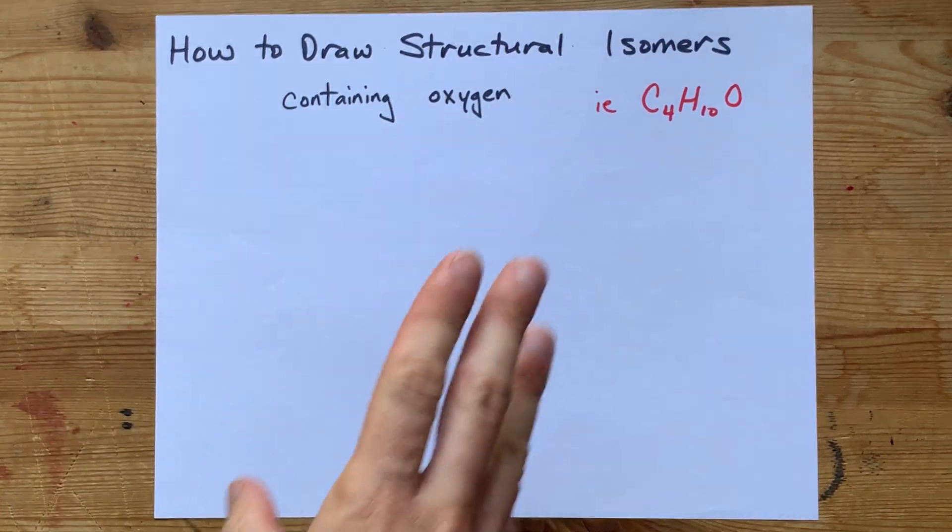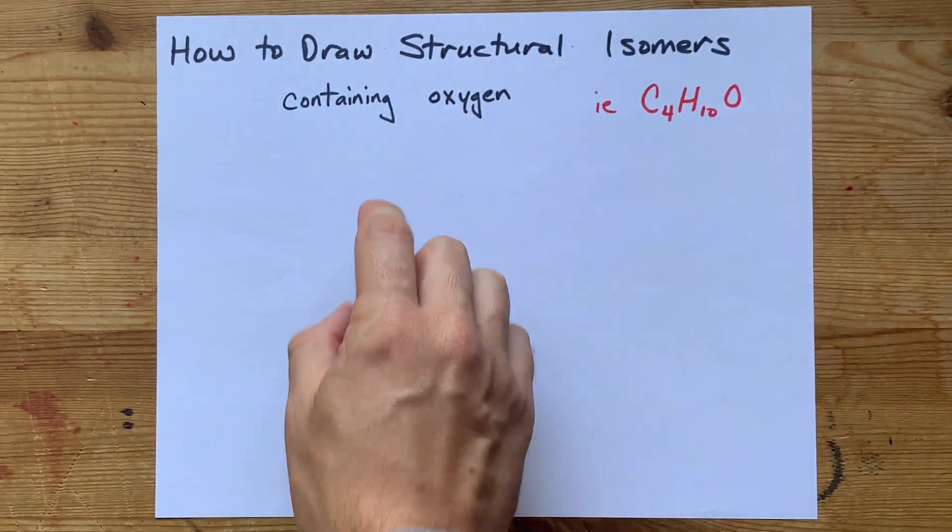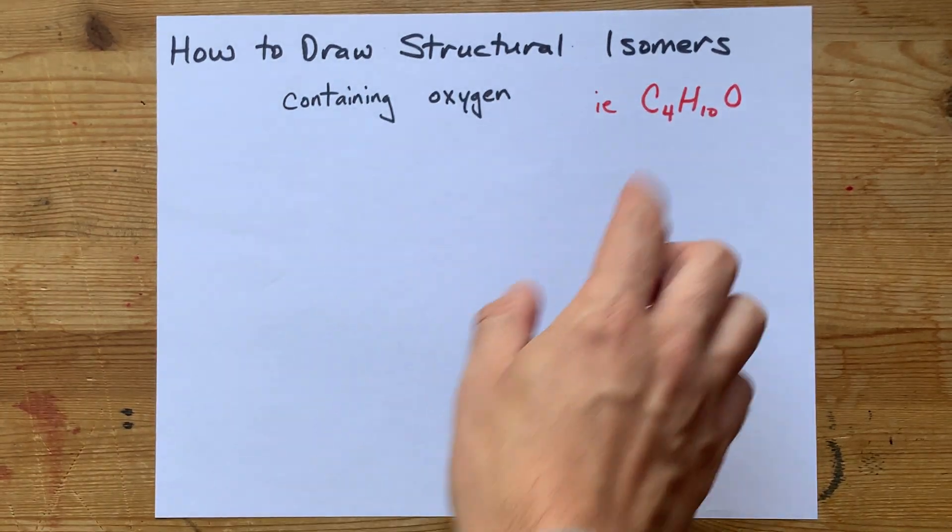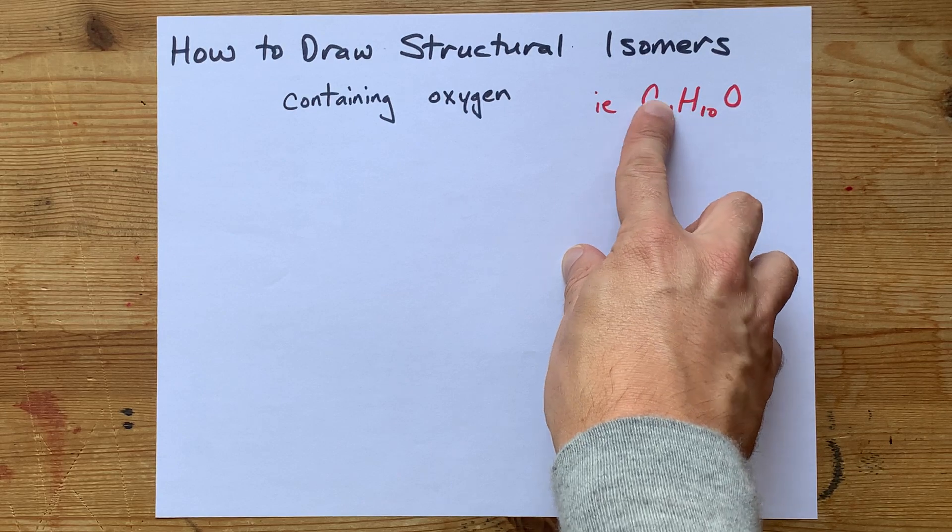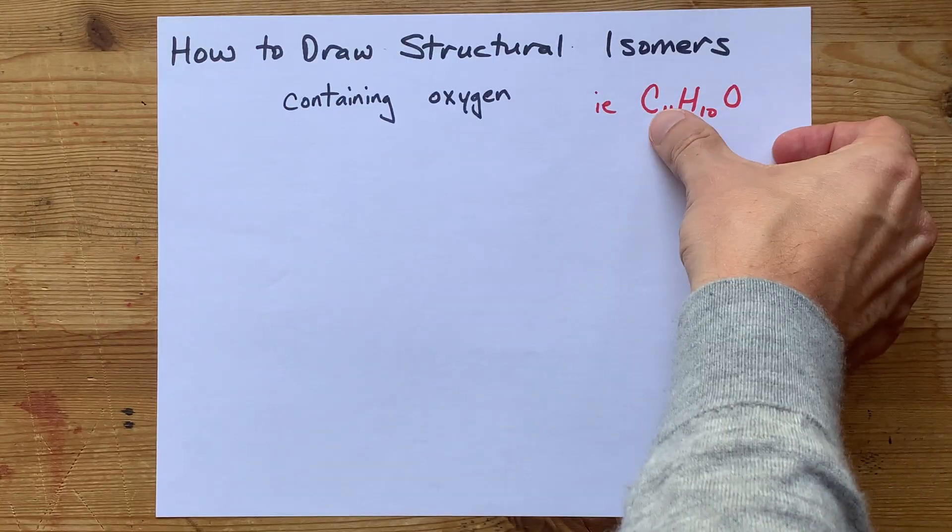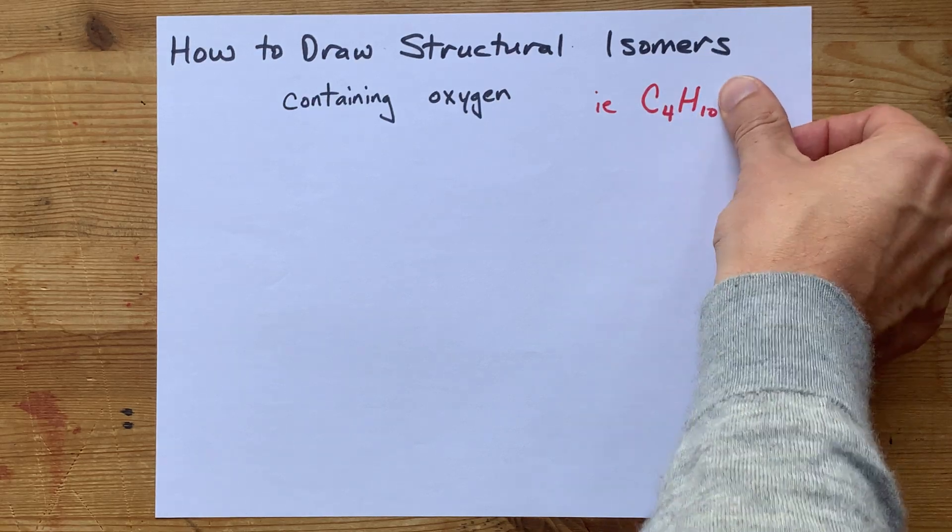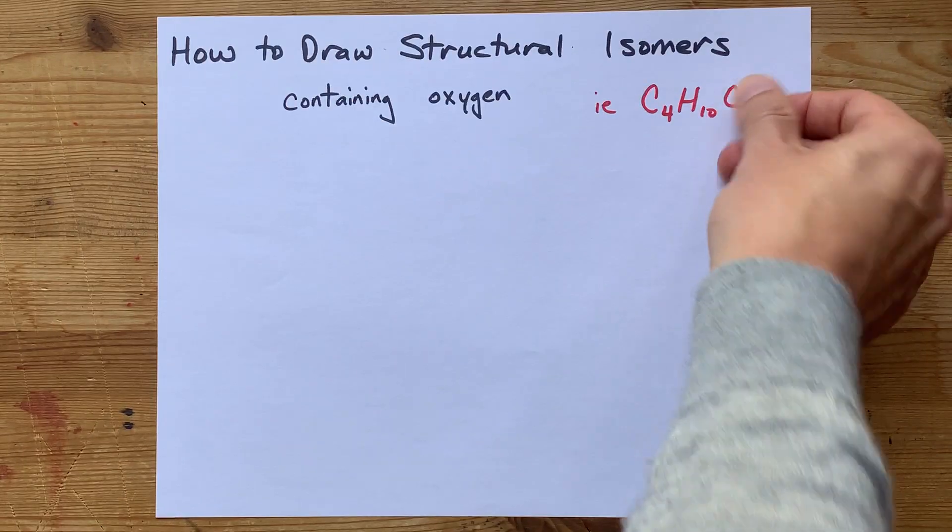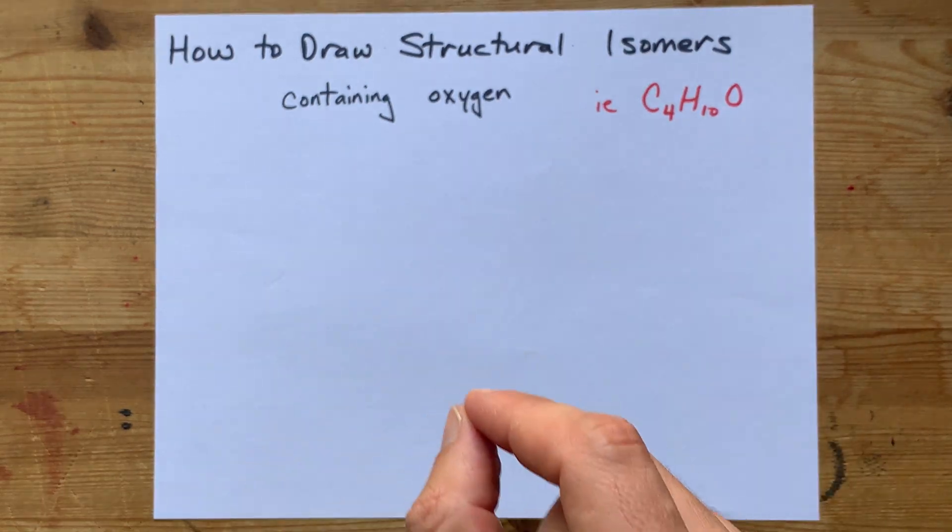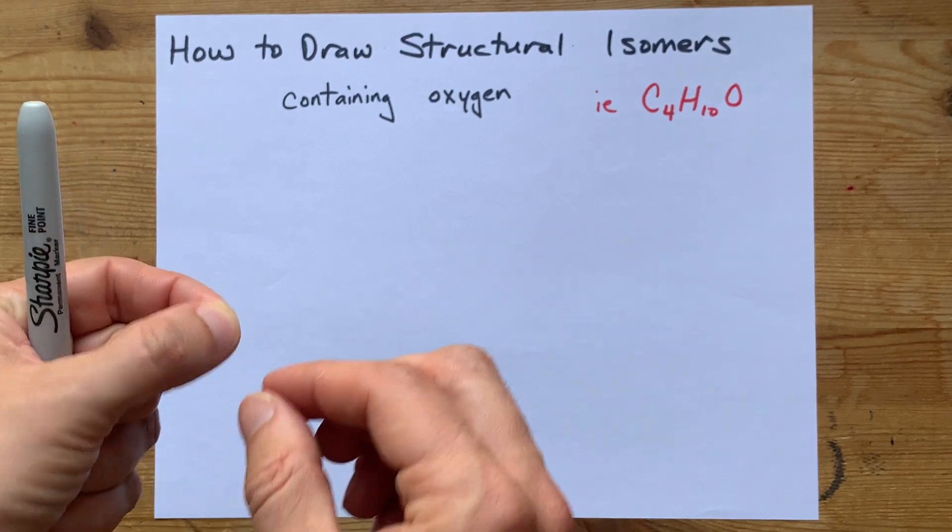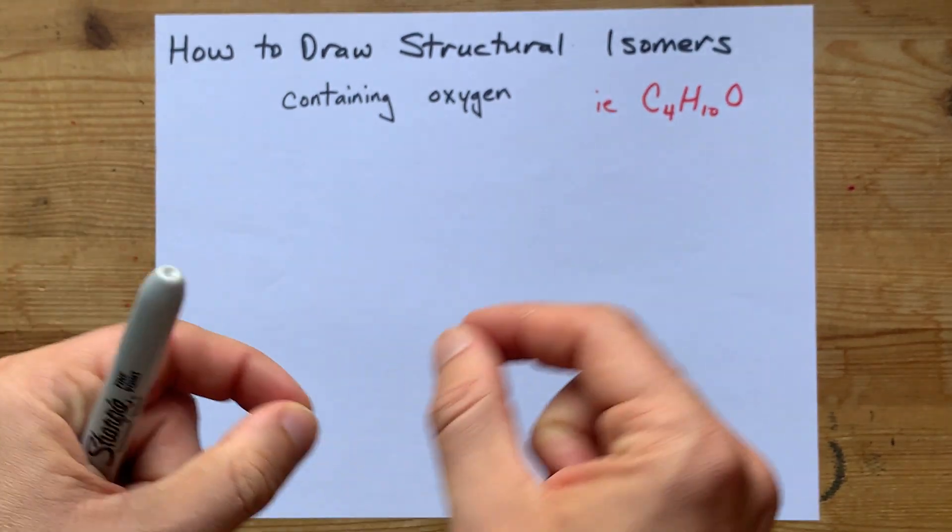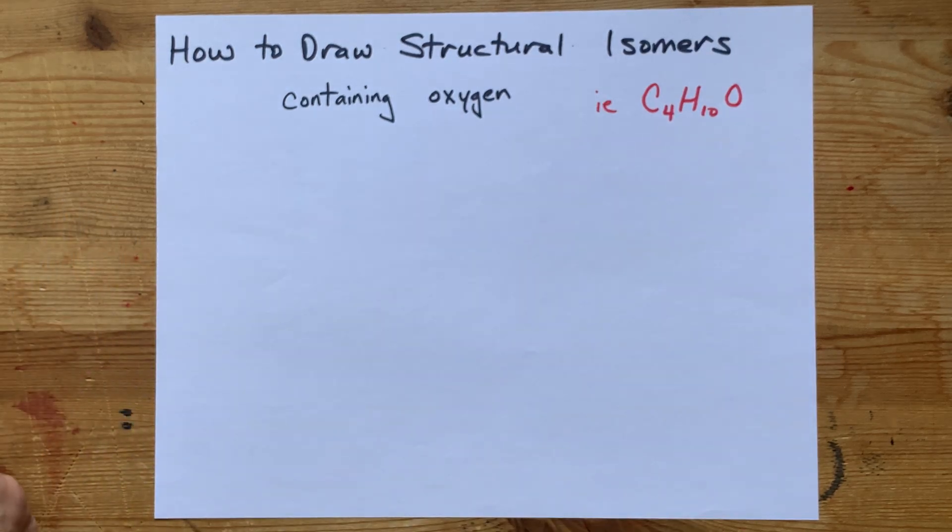How do you draw structural or constitutional isomers that contain oxygen? The answer in my world is to draw the constitutional isomers of the molecule without oxygen. In this particular example, C4H10O, it's C4H10. And then we're going to try to find all the places where we could insert an oxygen in between a carbon and a carbon or a carbon and a hydrogen. All of the different places you can insert that O is probably going to lead you to a different constitutional isomer.